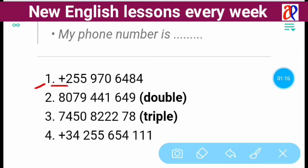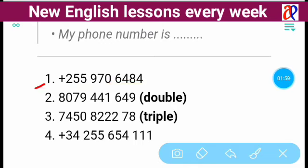This sign is called 'plus.' So this number can be read as plus two five five nine seven zero. Note that zero in a phone number can also be read as 'oh.' So you might hear someone say nine seven 'or' instead of nine seven zero. The entire phone number is plus two five five nine seven zero six four eight four, or plus two five five nine seven oh six four eight four.